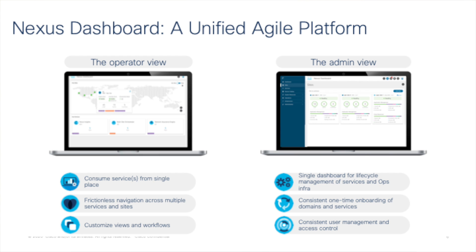A quick view of what the Nexus Dashboard offers: there are two views — the operator view and the admin view. The operator view is simple: the operator's goal when logging in is to see the health of their sites and the state of the services they have access to. When they click into these services, they should not have to log in again or look up URLs or credentials from spreadsheets. It's a unified user experience powered by SSO — removing all friction. Operators can also customize their views and look at issues or change management workflows they're working on.